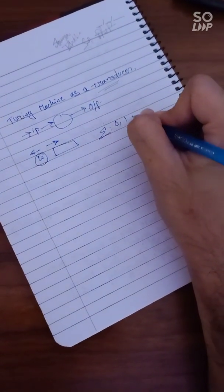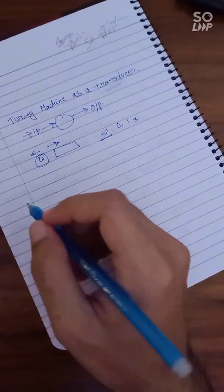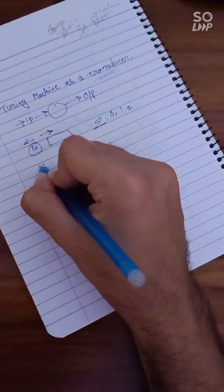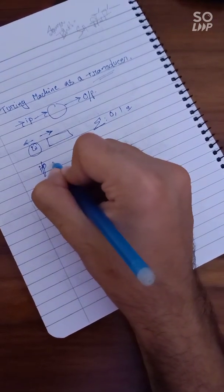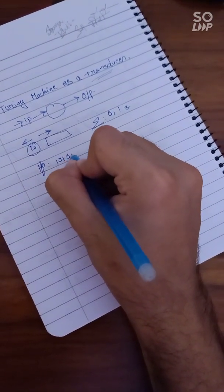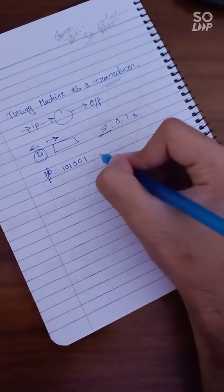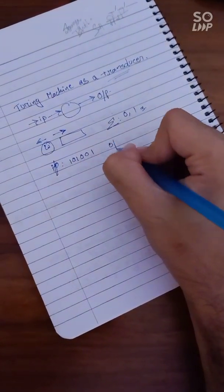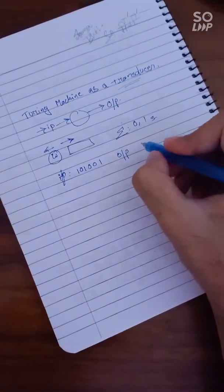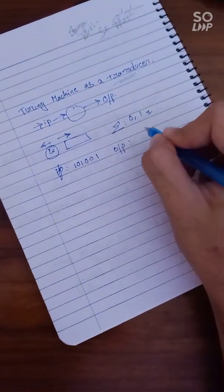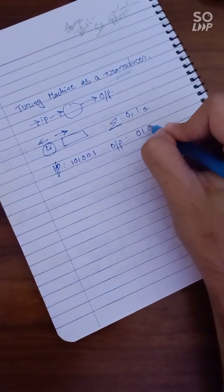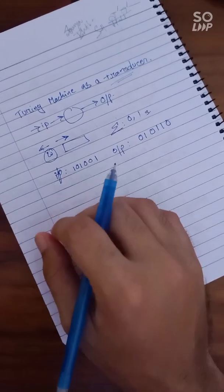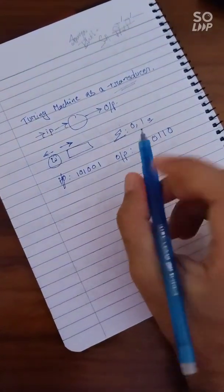So let's say if the input is over zero and ones, and suppose the input given is 101001. So the required or the expected output is going to be the one's complement of this one, that is 010110.